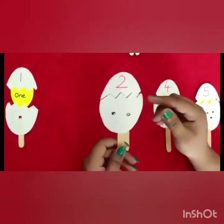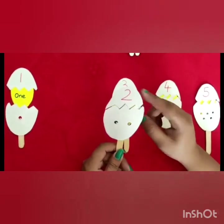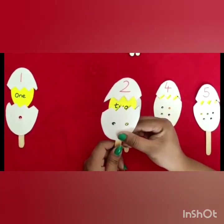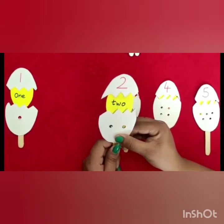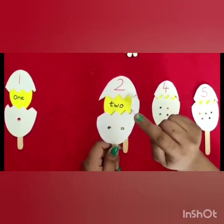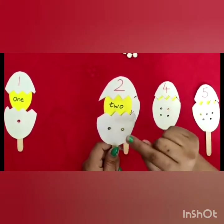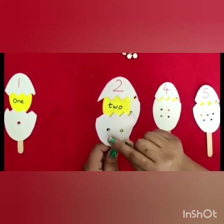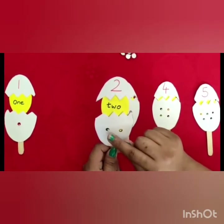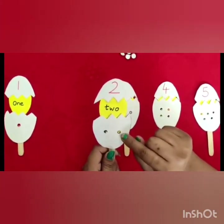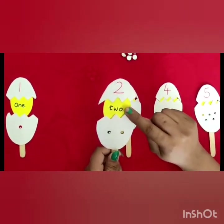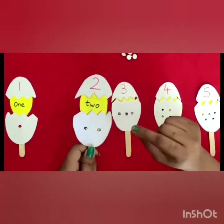Next number is 2. So, let us see the number name. 2 — T, W, O — 2. And we will see the values. We will count: 1 and 2. Okay. So, here is the number, here is the number name, and the value.